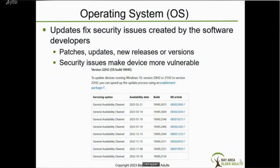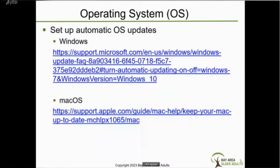When developers build software, inevitably humans aren't perfect — there are bugs, which are program errors. These errors can make your device vulnerable to malware like spyware and hackers. This is why developers release patches, updates, and new versions. You can use the links shown here to learn about how to set up automatic operating system updates — that's one software you want to update on a regular basis.